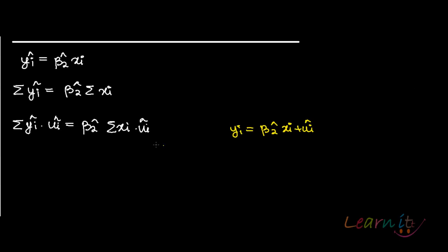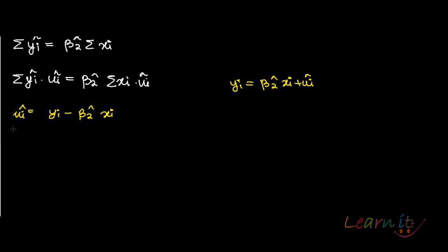You can write ui hat as yi minus beta 2 hat xi. So summation yi hat ui hat can be written as beta 2 hat summation xi into this expression: yi minus beta 2 hat xi.